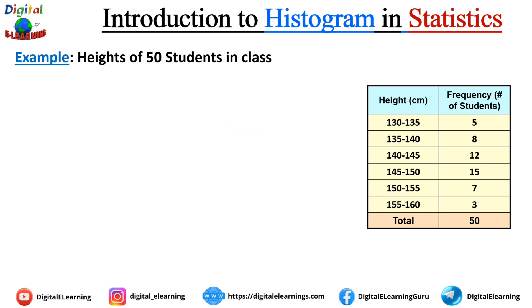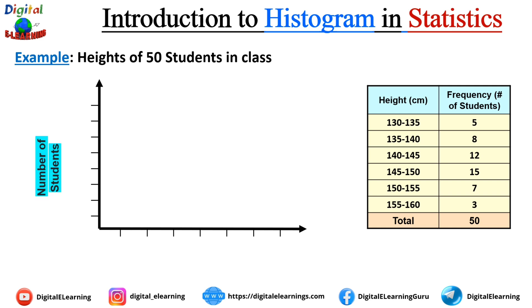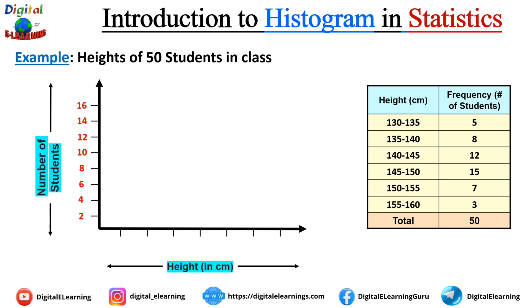Now let us plot the two axes — the x-axis and the y-axis. On the y-axis (the vertical axis), we represent the number of students, or the number of times a value occurred in a particular interval. We plot numbers with a difference of 2: 2, 4, 6, and so on. On the horizontal x-axis, we plot the height values, taking a difference of 5 — starting from 130 as the lowest and up to 160 as the highest.